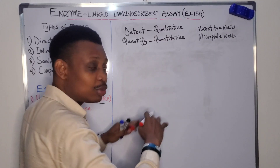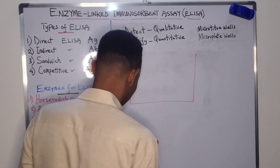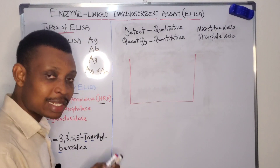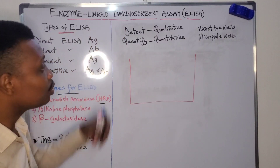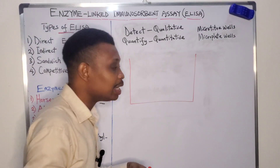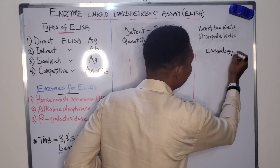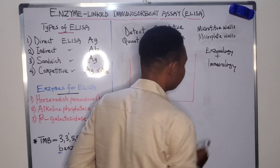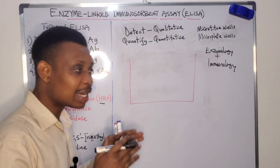The ELISA technique combines the mechanism and principles of enzyme-linked immunosorbent assay. The 'immuno' represents immunology, and the 'enzyme' represents enzymology — so it combines the principles of enzymology and immunology.